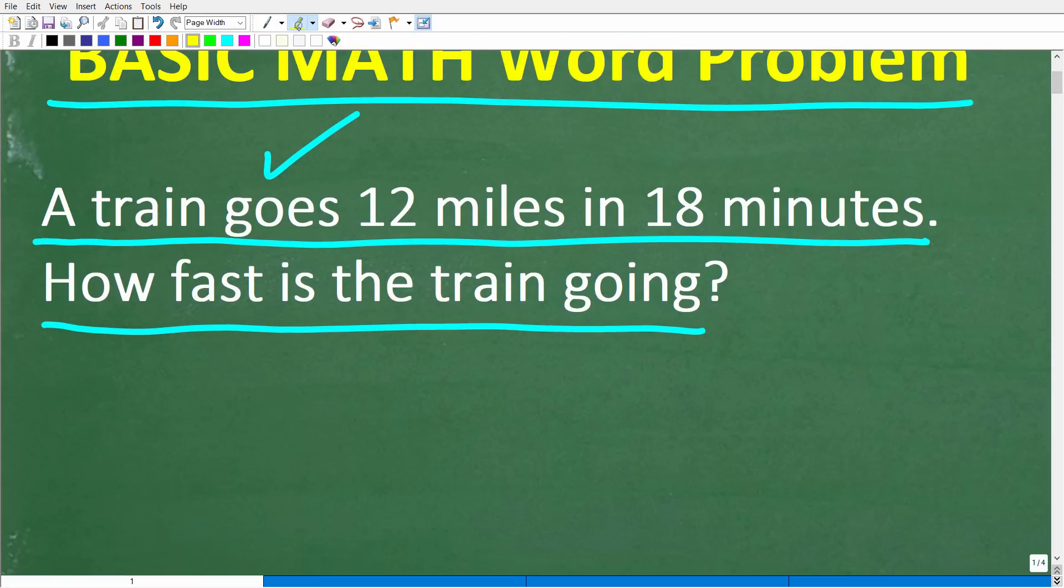Okay, so one more time. The question is, a train goes 12 miles in 18 minutes. How fast is the train going? In other words, what is the speed of the train? Okay, so let's take a look at the answer.